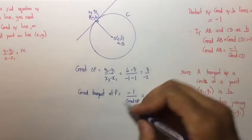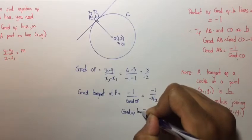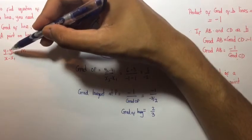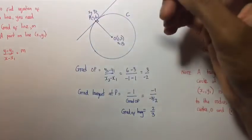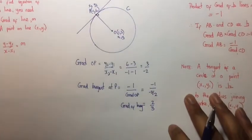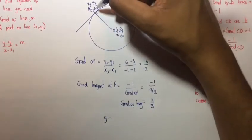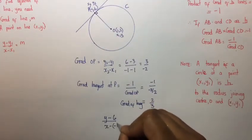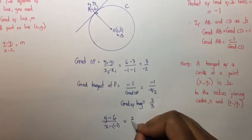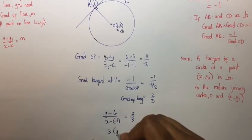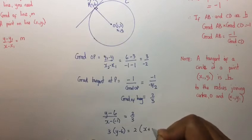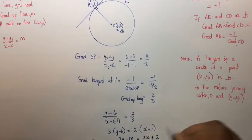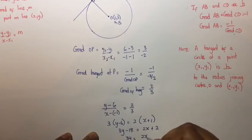Now that we have the gradient of the tangent and a point on the line P, we can use the equation Y minus Y1 over X minus X1 equals M to find the equation of the tangent. So, Y minus 6 over X minus minus 1 is equal to the gradient M, which is 2 over 3. Therefore, 3 times (Y minus 6) equals 2 times (X plus 1), giving us 3Y minus 18 equals 2X plus 2, so 3Y equals 2X plus 20. This is the equation of the tangent at point P.